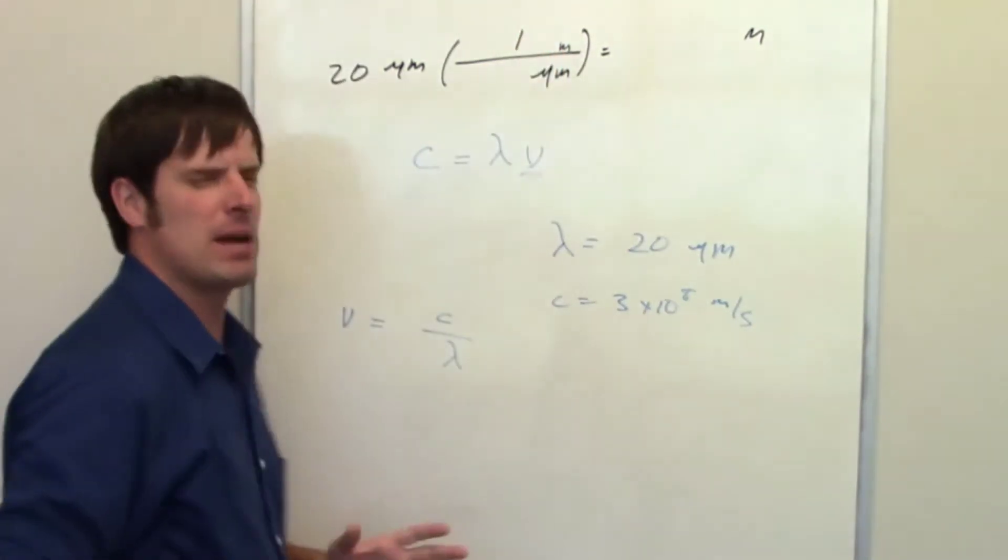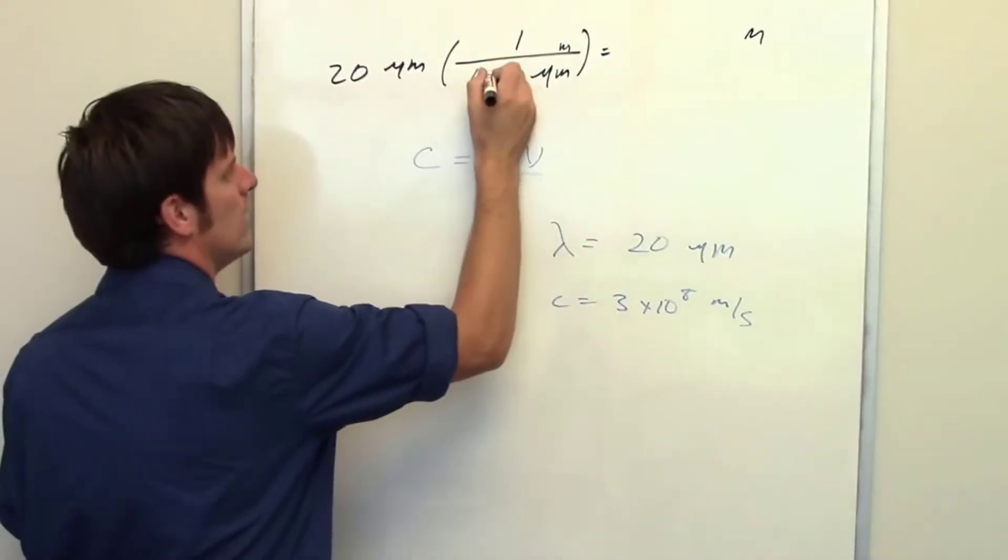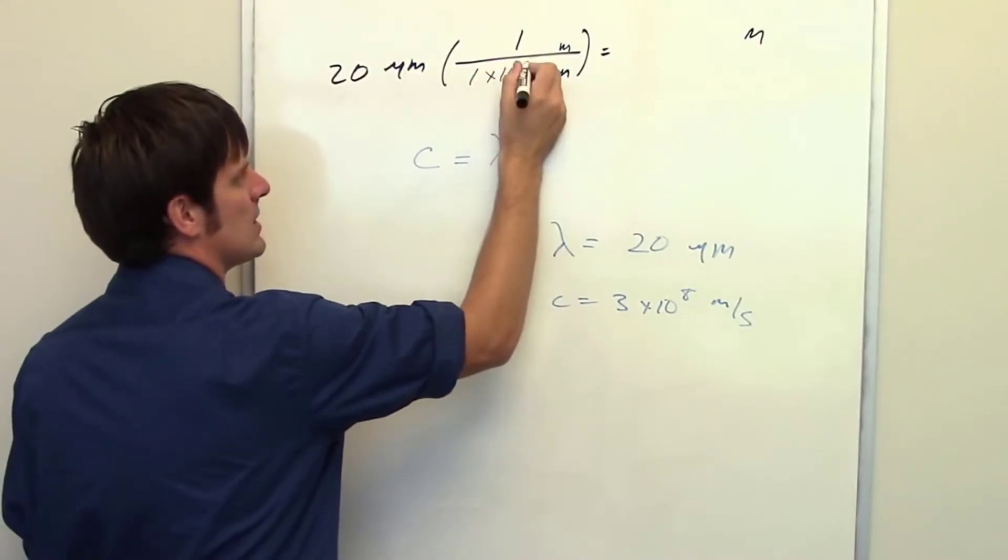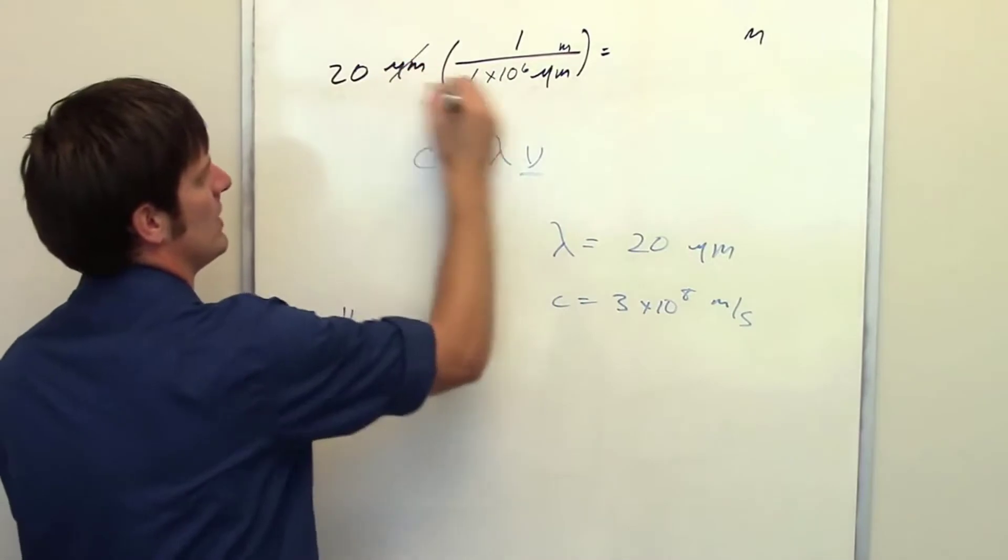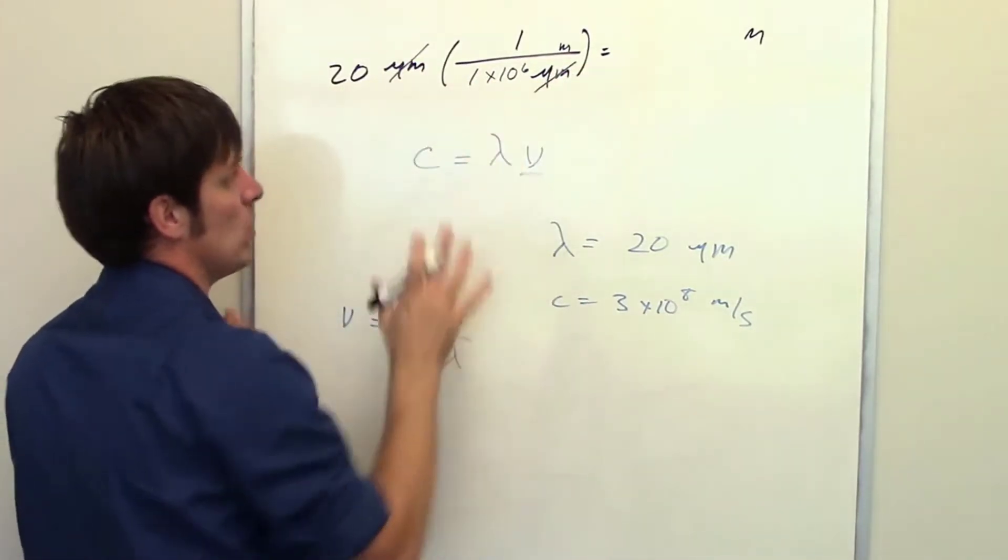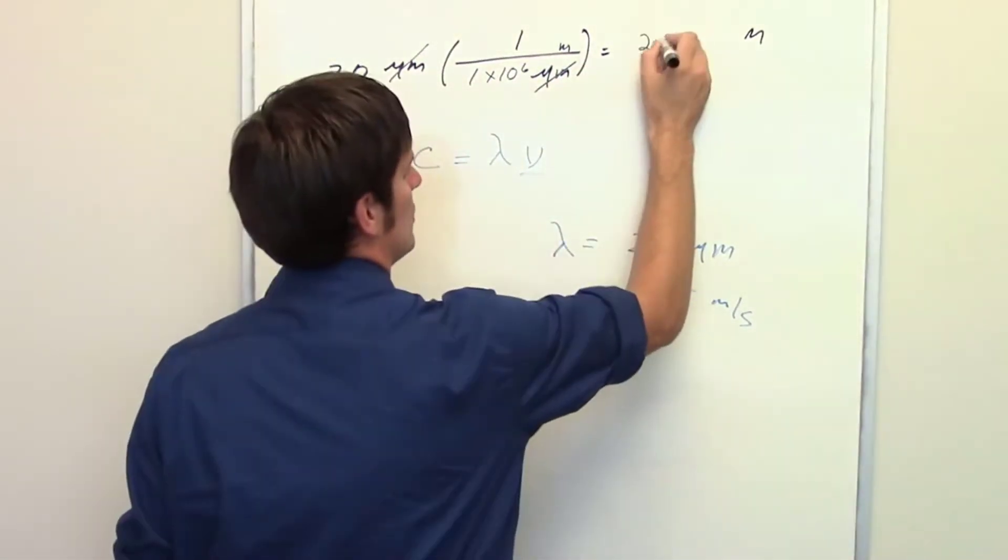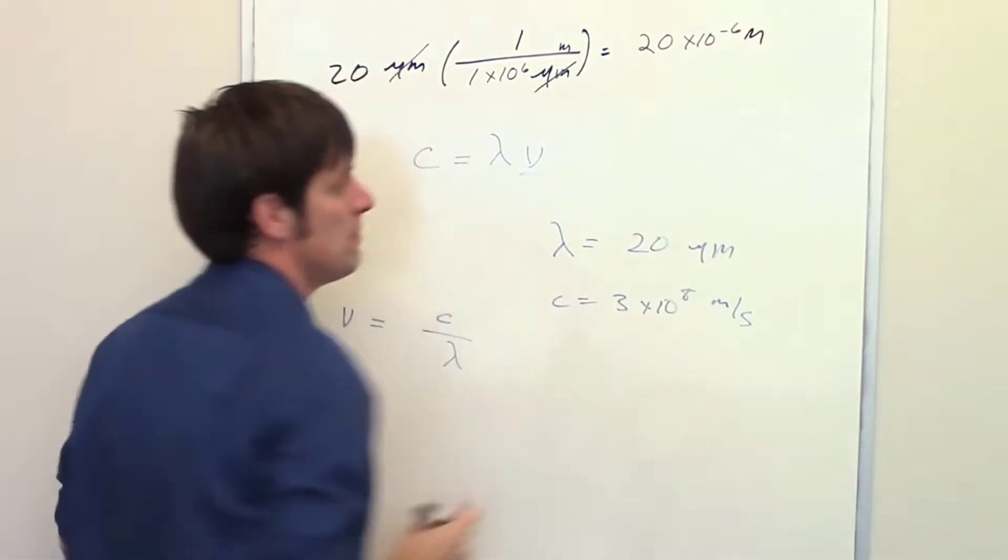In one meter, how many micrometers are there? There are 1 times 10 to the sixth. And that should be something that you memorize. The micrometer units cancel each other out. 20 divided by 1 times 10 to the sixth equals 20 times 10 to the negative sixth meters.